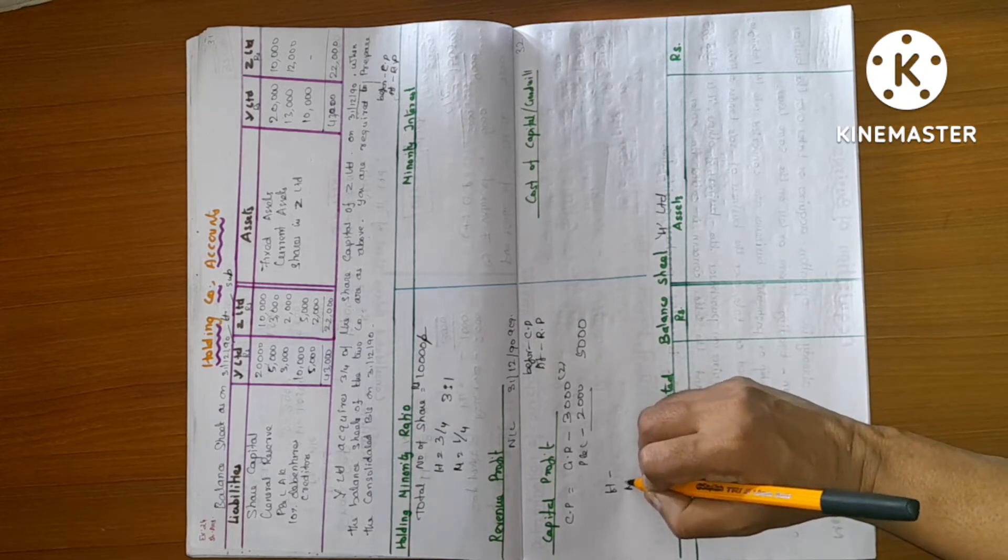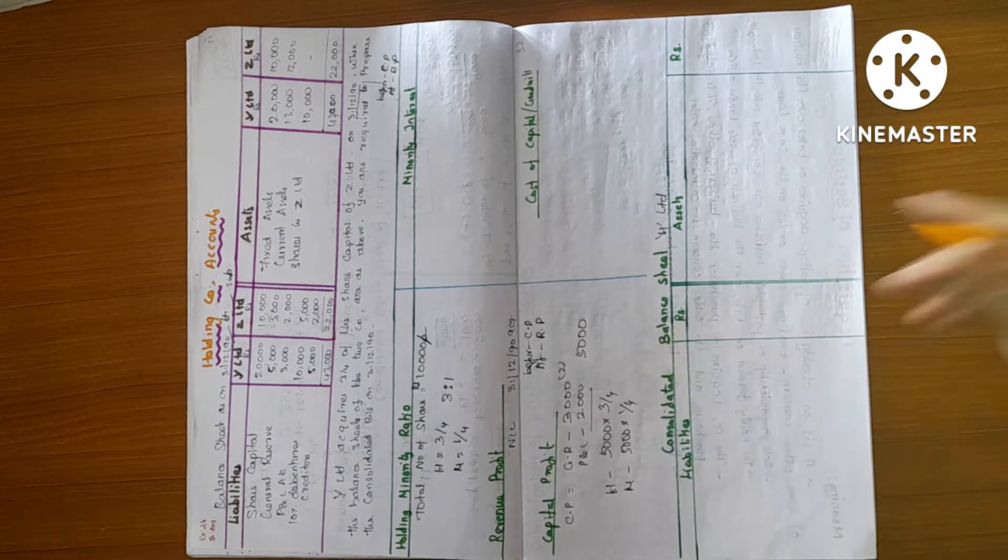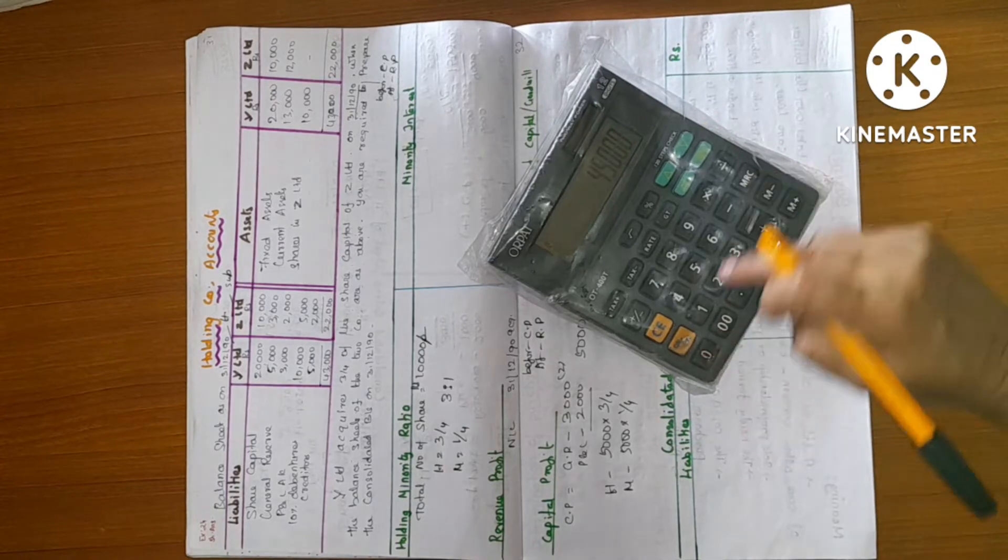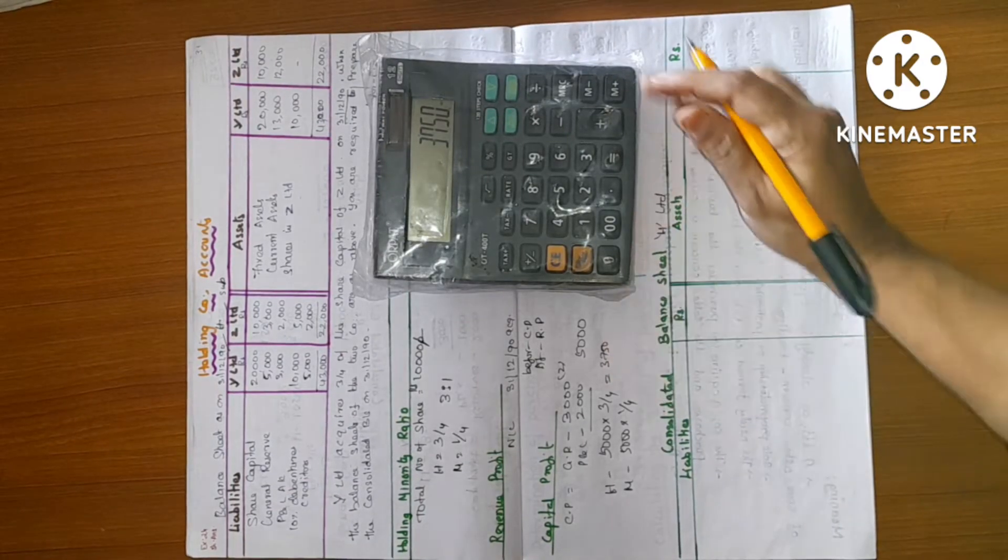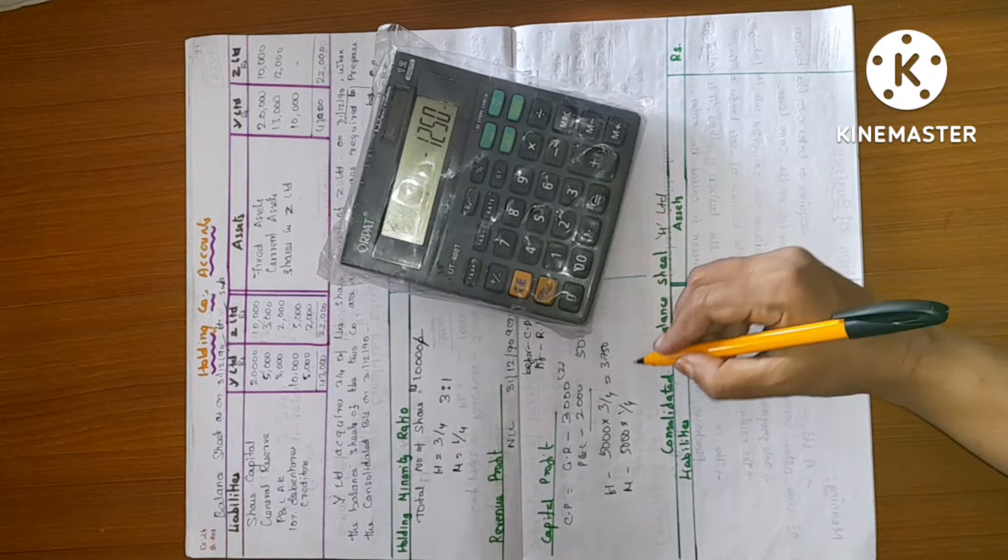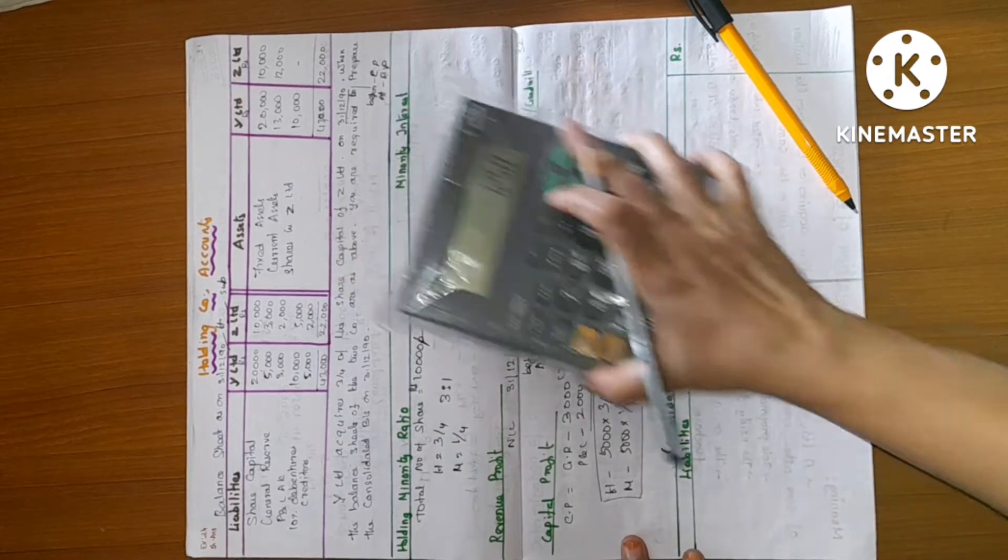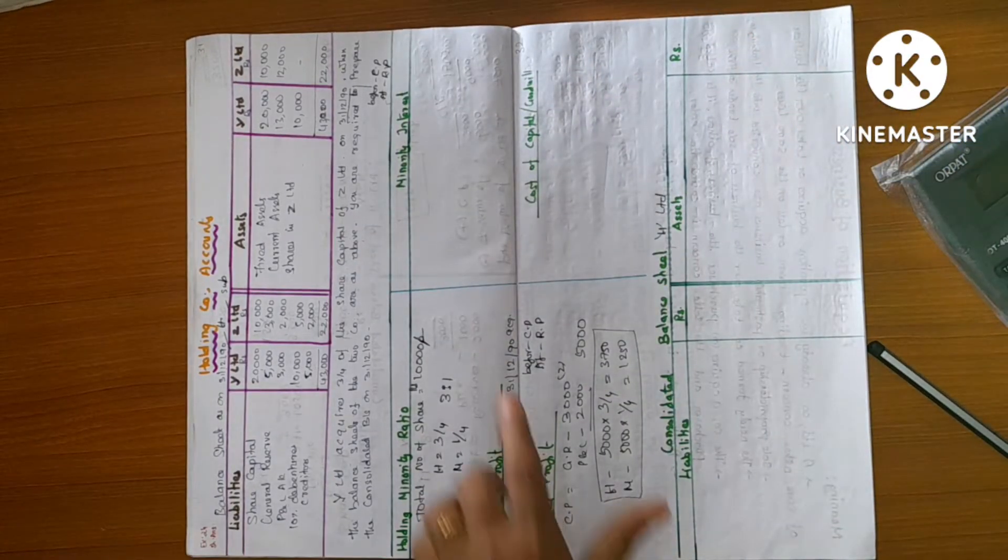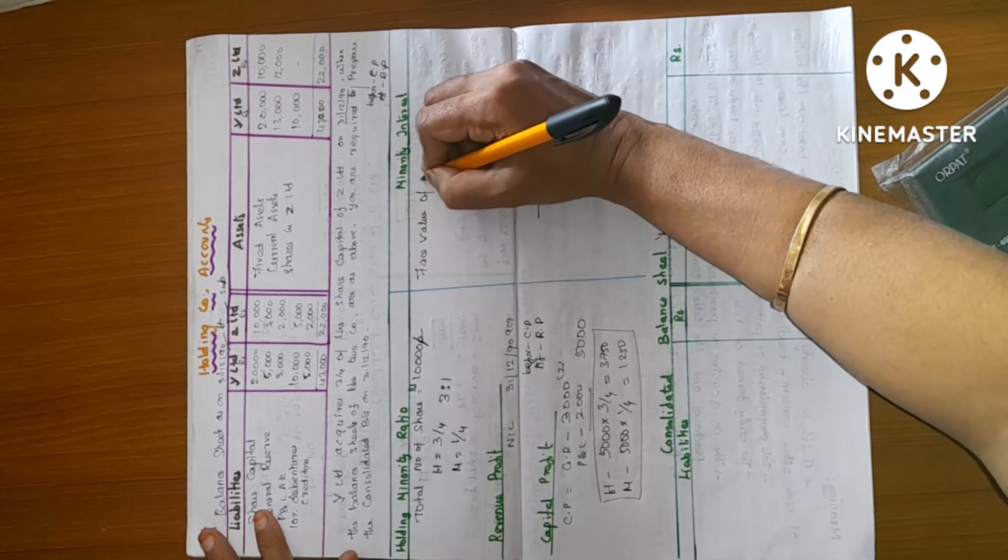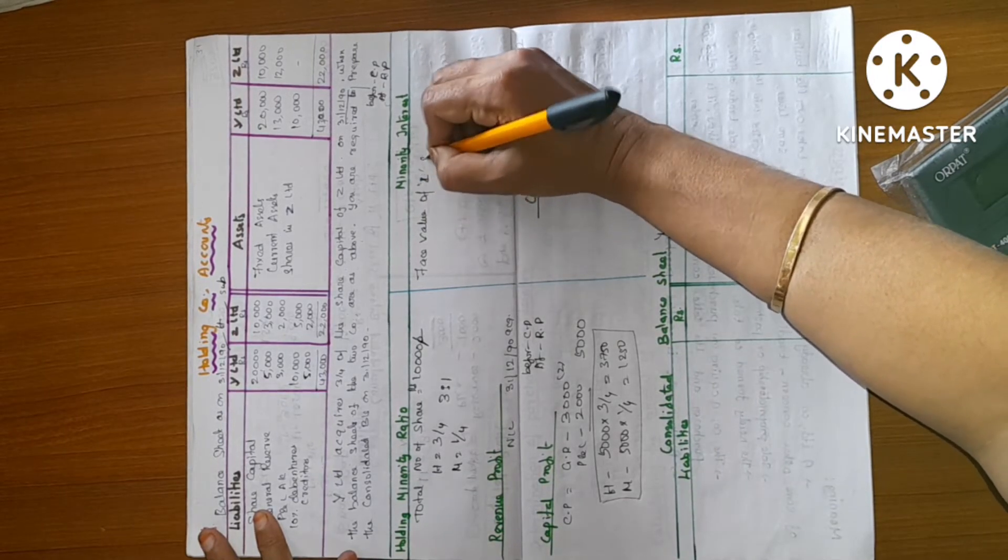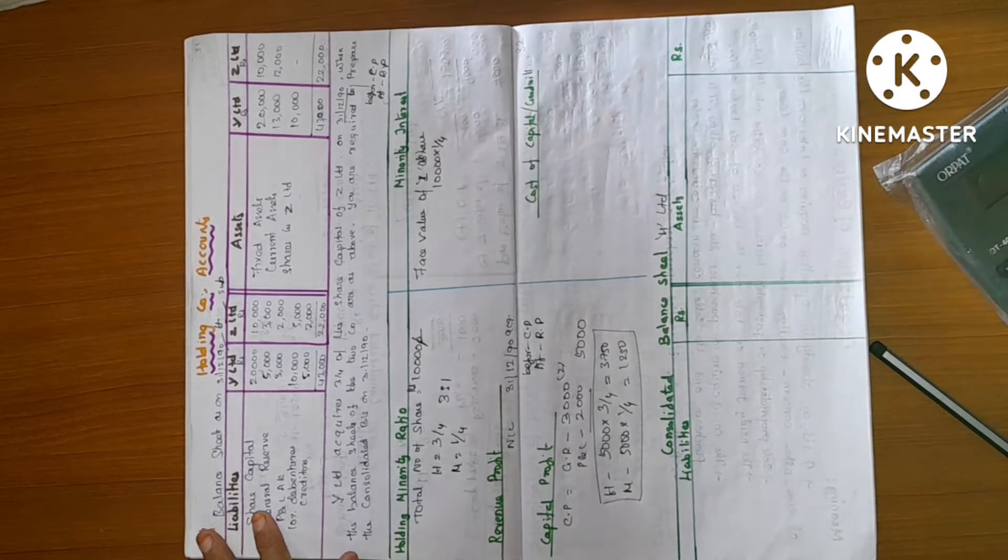This is holding company minority holders. So 5,000 into 3 by 4, 5,000 into 1 by 4. 5,000 into 3 by 4, the value is 3,000. Minority holders 1/4th, 10,000, 1/4th.